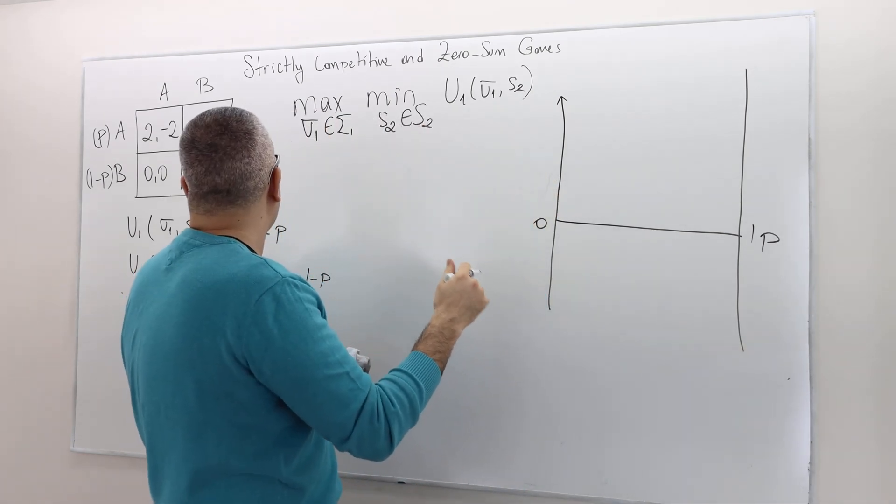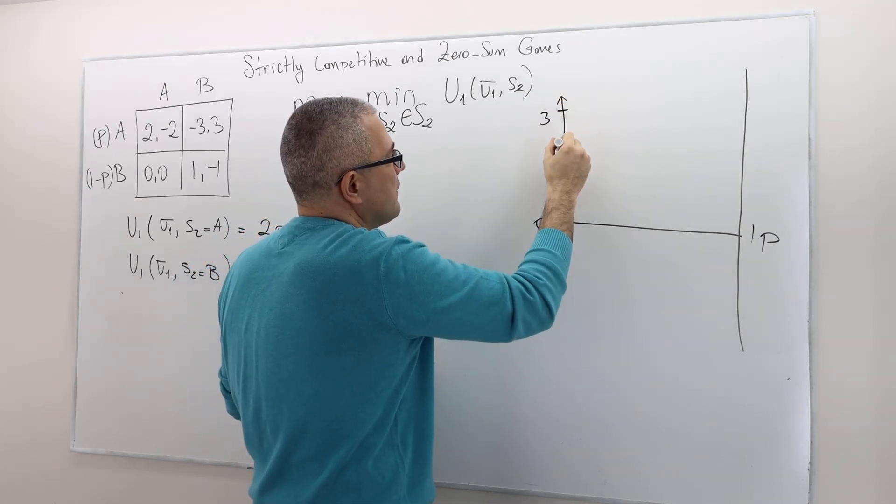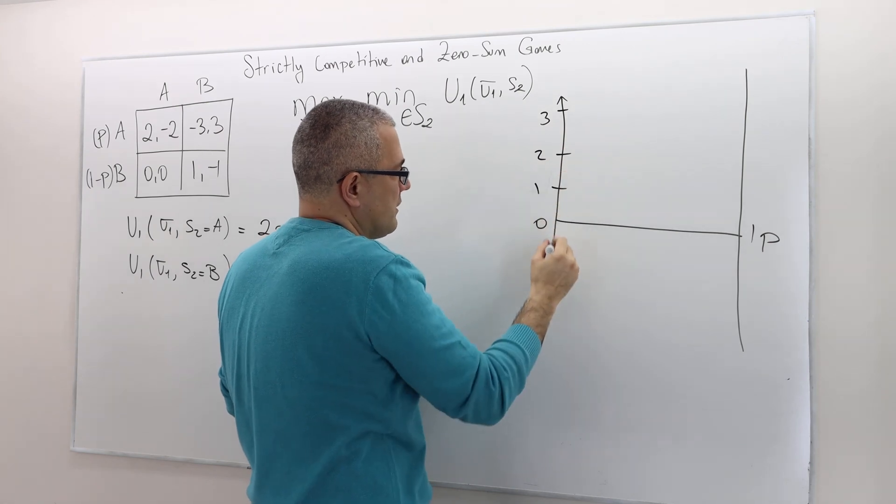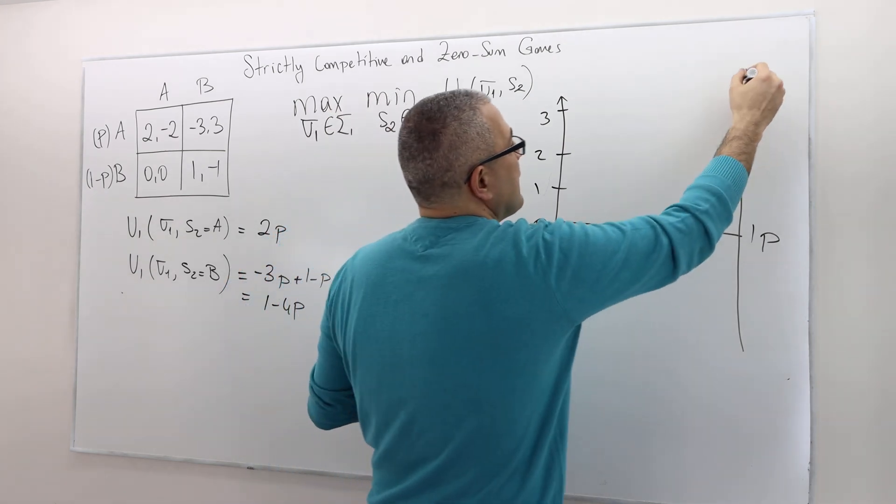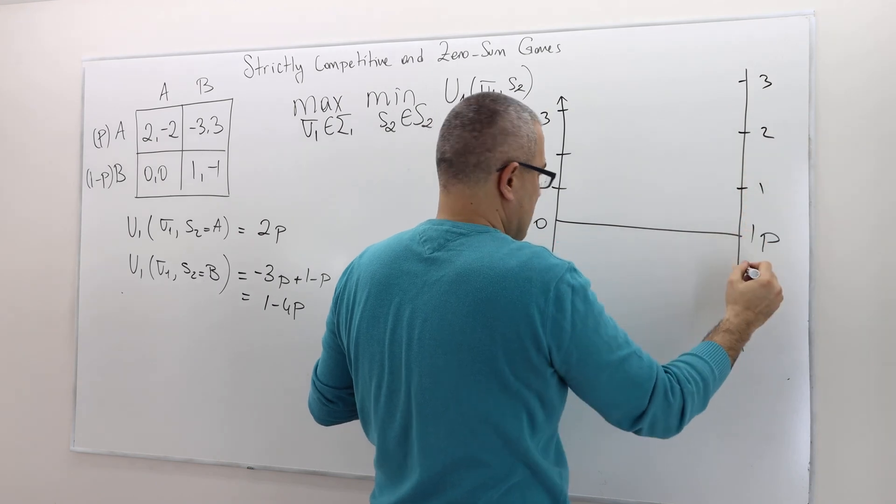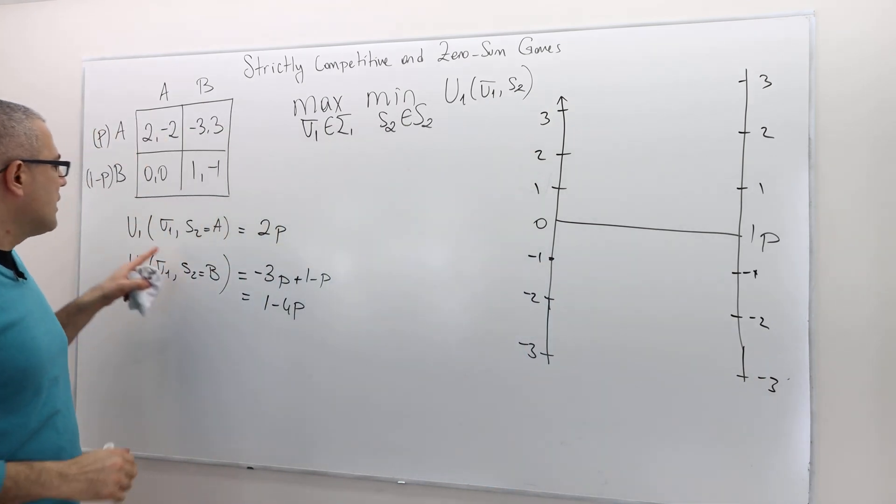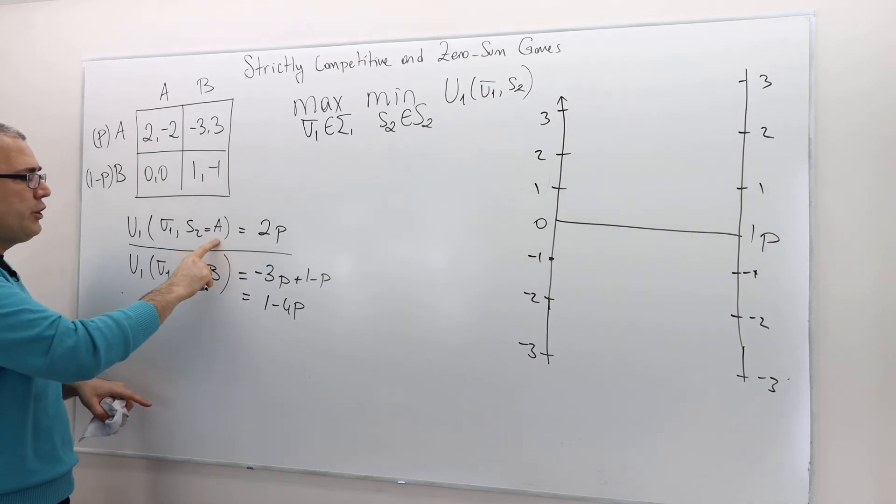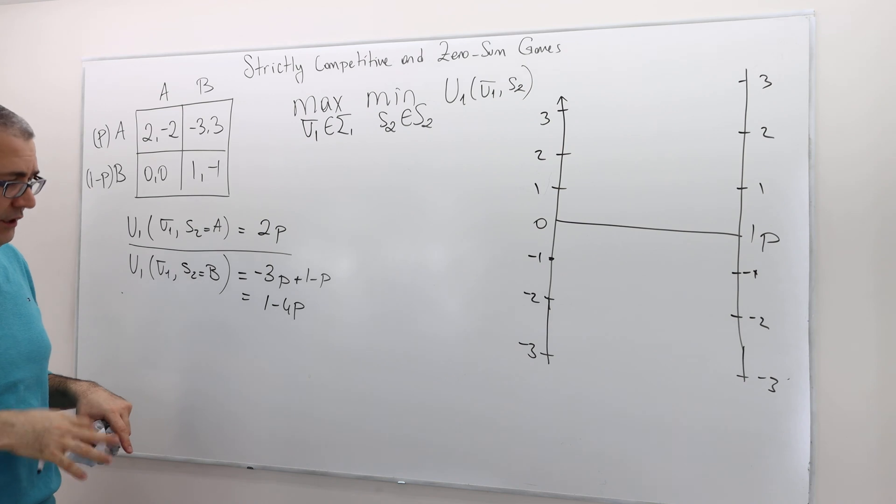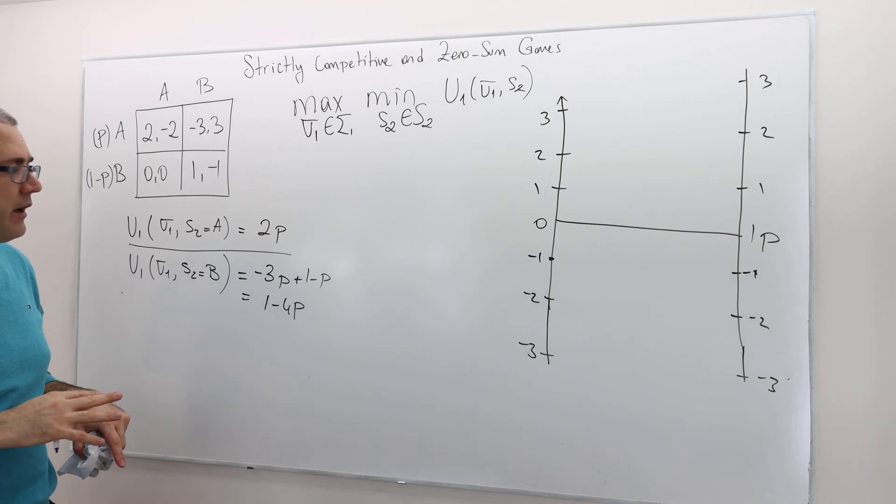The payoff can be at most three, remember? So this is three, let's say. This is 2, 1, 0, and then minus 1, minus 2, and then minus 3. And then same here, 3, 2, 1, minus 1, minus 2, and minus 3. Okay? So now I'm going to draw this as a function of p, right? What if player two plays A? What is the expected payoff of player one? It's 2p. So if p is zero, expected payoff is zero. If p is one, it's a linear function, right? If p is one, then the expected payoff is two.